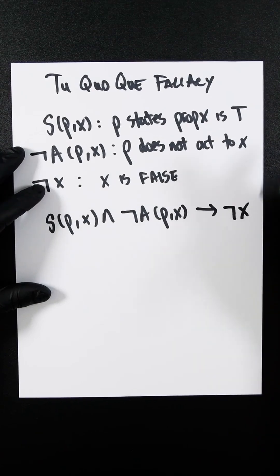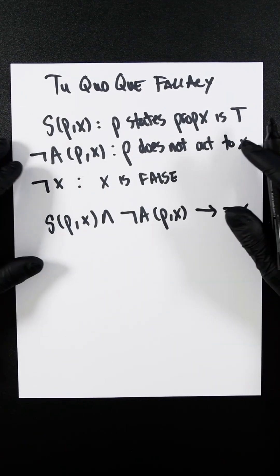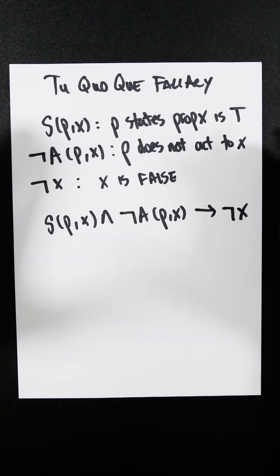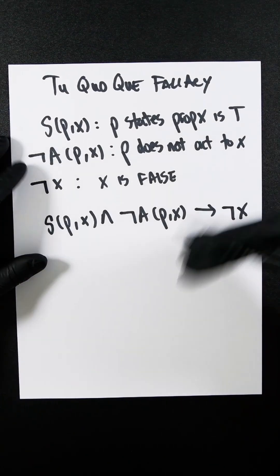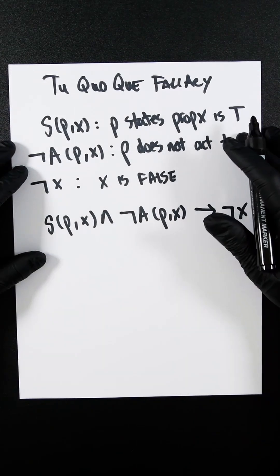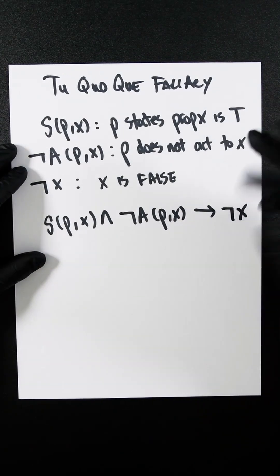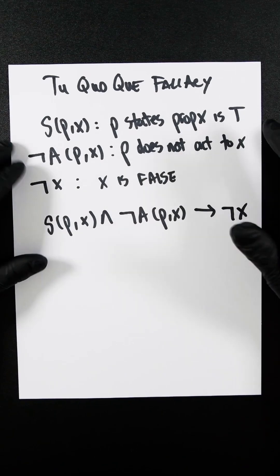So that's how you read your predicate logic. A great example is if somebody who is a smoker for 40 years, suffering from cancer, tells somebody do not smoke. Somebody would say, well, you smoke. And how can you tell that to somebody?